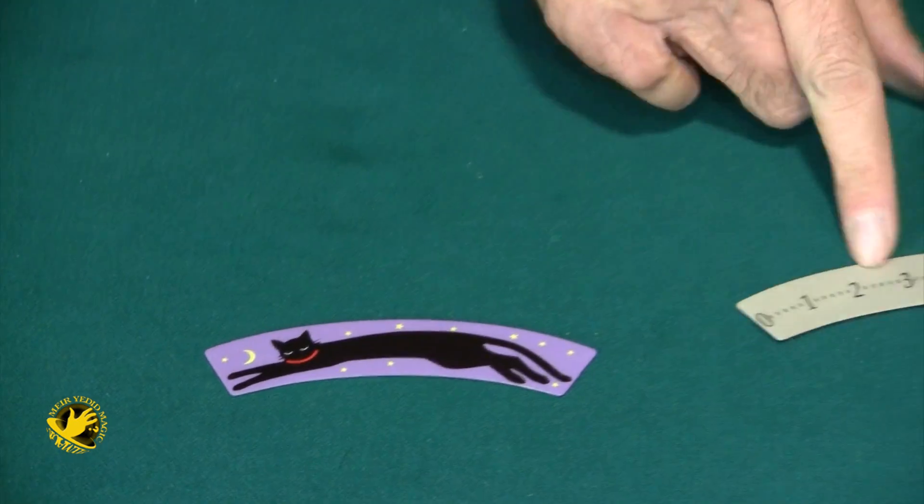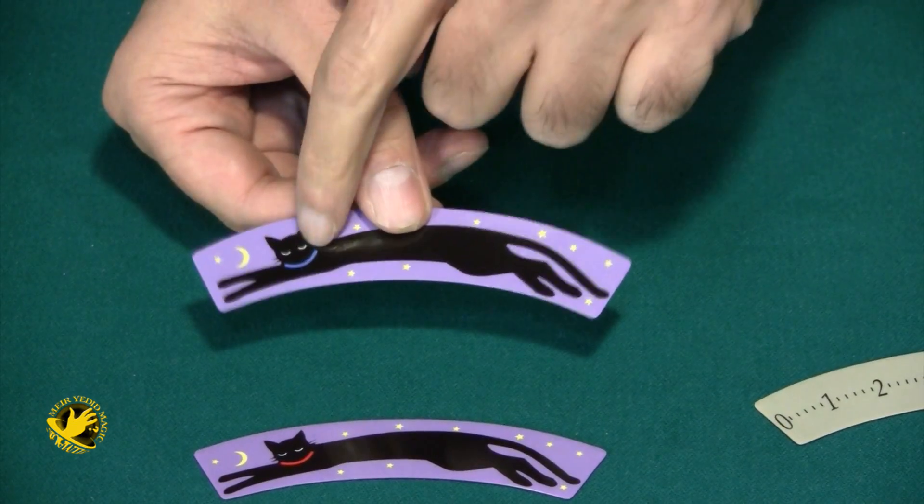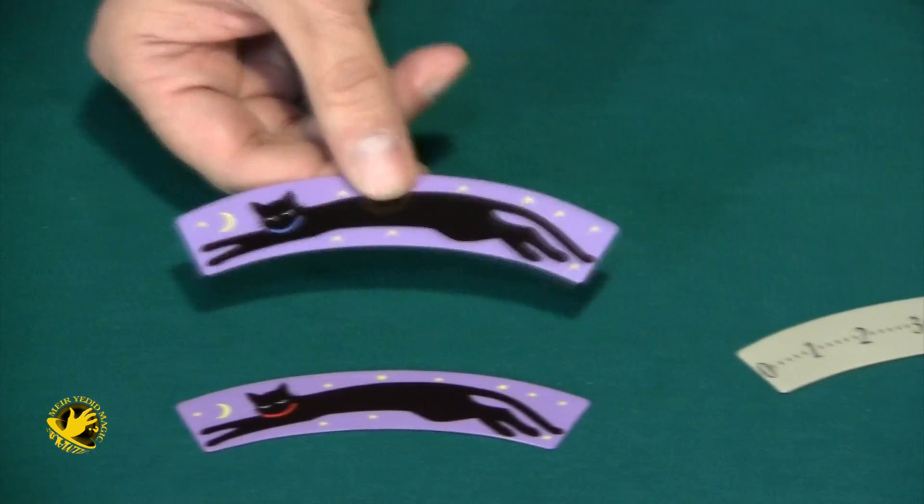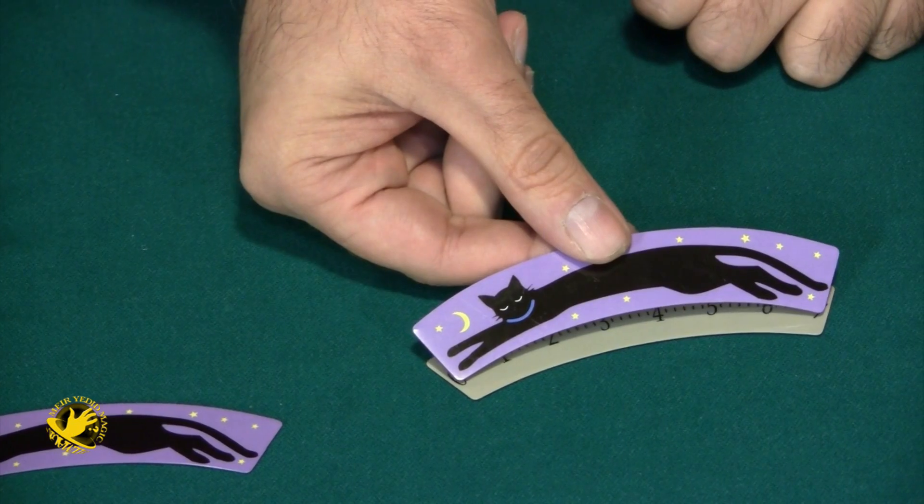Besides the ruler and the girl cat, I also have a boy cat. You can tell this is the boy cat because of the blue collar. The boy cat is also roughly around seven, the same size.